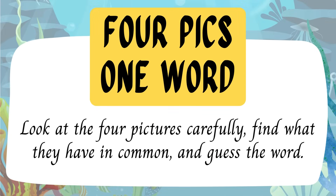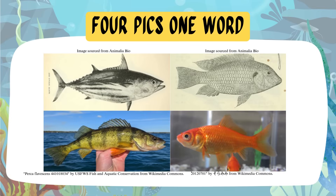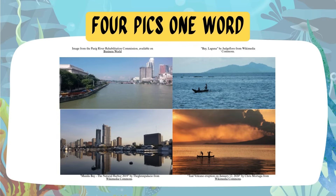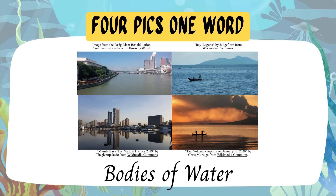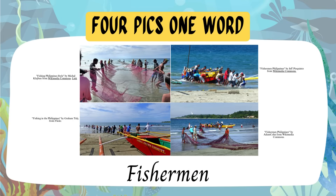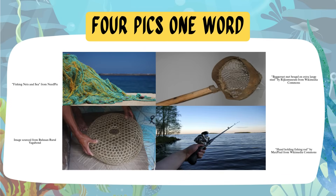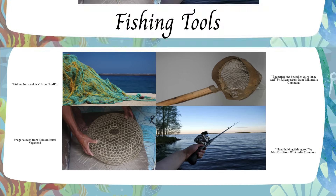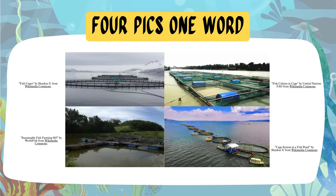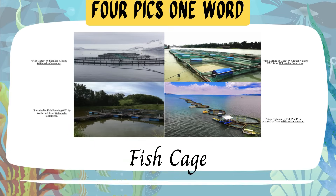Four Pics One Word: Look at the four pictures carefully, find what they have in common, and guess the word. The answers include: Kinds of Fish, Bodies of Water, Fishermen, Fishing Tools, and Fish Cage.